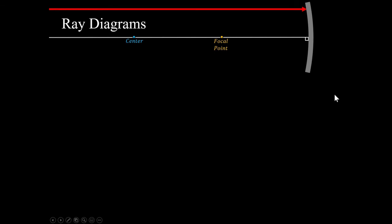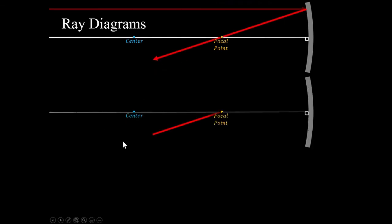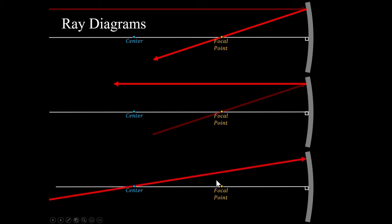We don't have to draw all those lines to figure out where the image is — we only need a couple of lines using ray diagrams to determine the image characteristics and location. If we draw a ray parallel to the axis, it's going to reflect through the focal point. If we draw a ray through the focal point, it will come back parallel. If we draw a ray through the center of curvature, it's going to hit squarely and bounce straight back. We only need two of those lines to intersect to find the image.